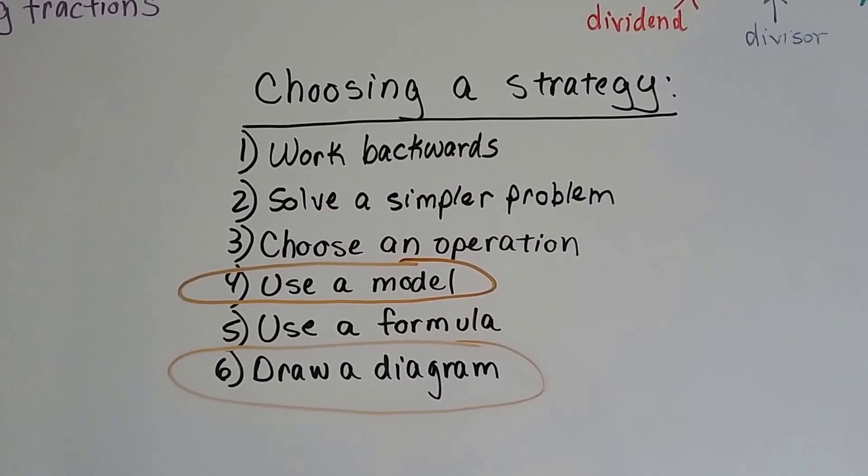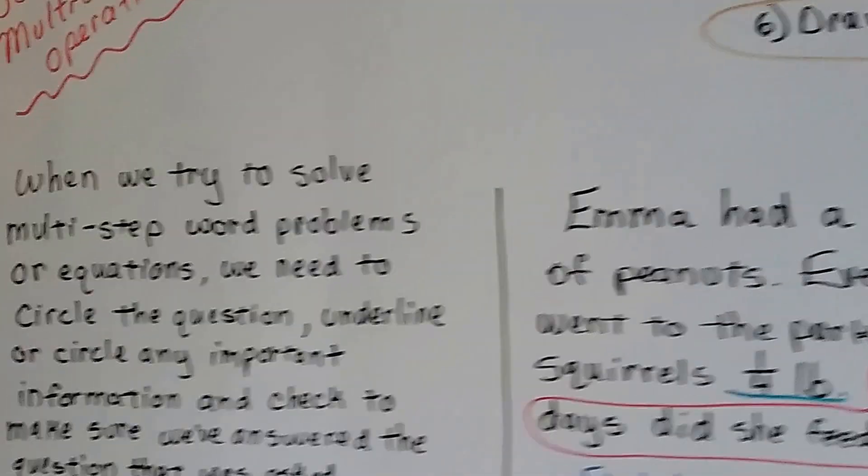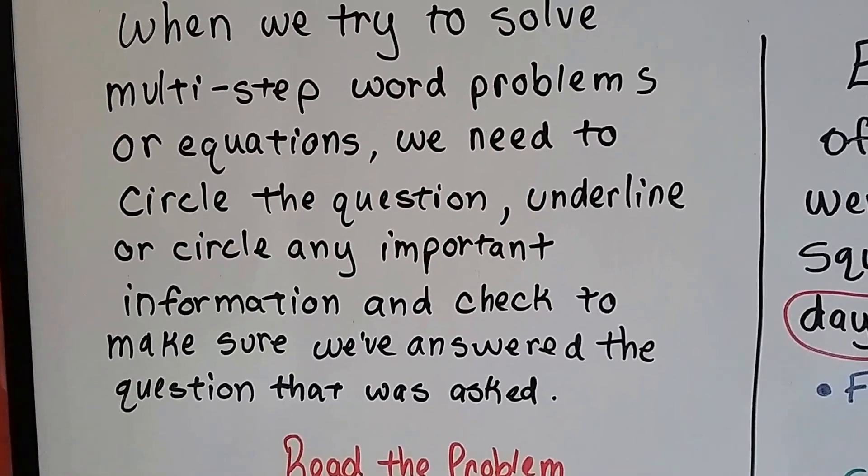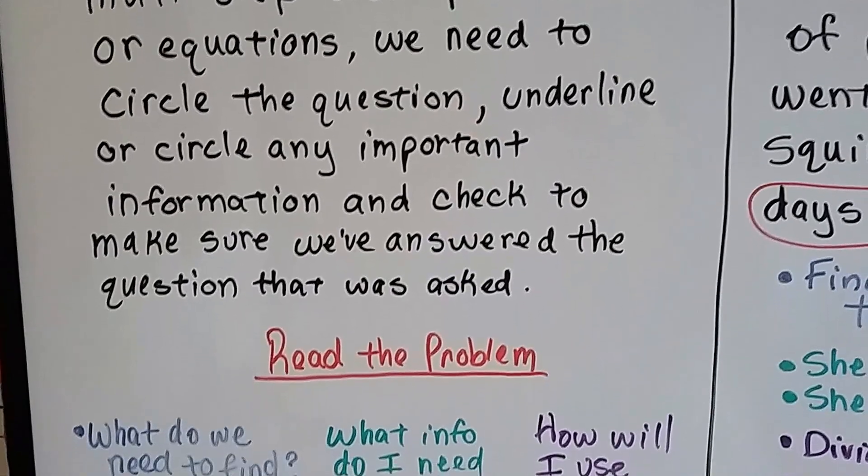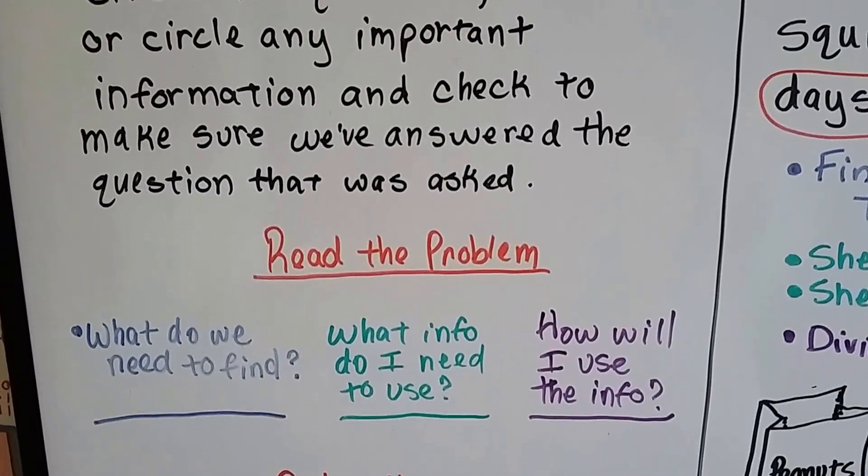We're going to use models and draw diagrams for these. When we try to solve multi-step word problems or equations, we need to circle the question, underline or circle any important information, and check to make sure we've answered the question that was asked.